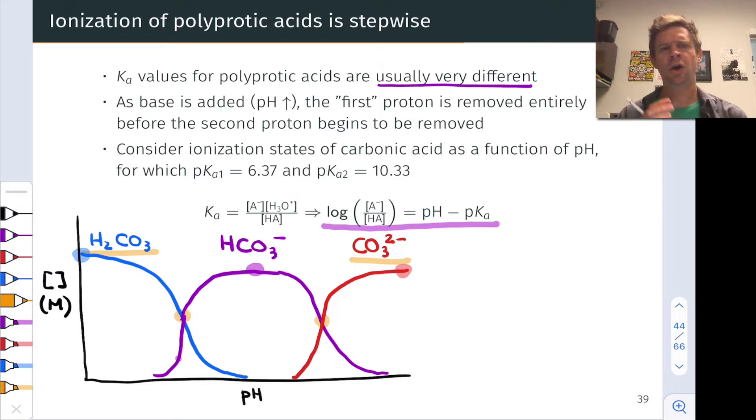To introduce buffers, I want to return to this graph of the concentrations of various ionization states of a polyprotic acid as a function of pH. I want to focus on these regions where the concentrations of the acid and its conjugate base are relatively close to one another or exactly equal.